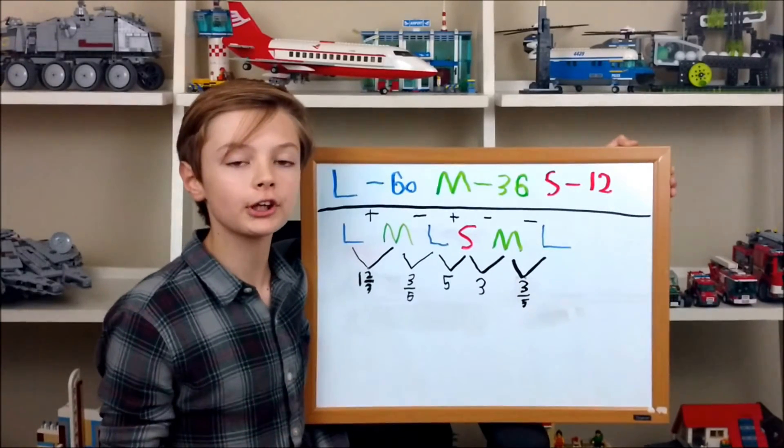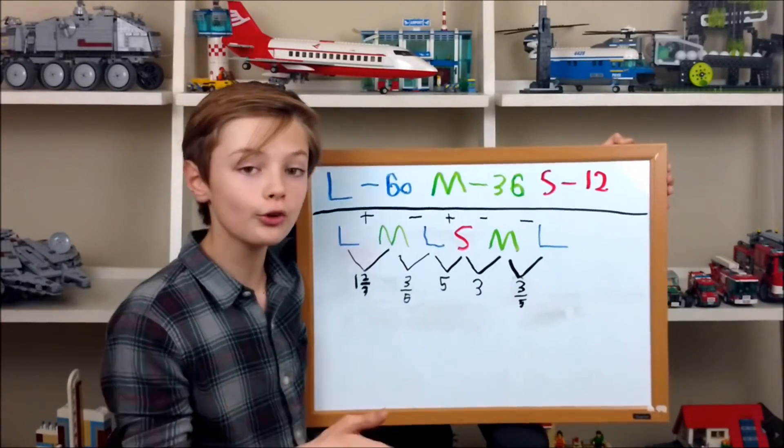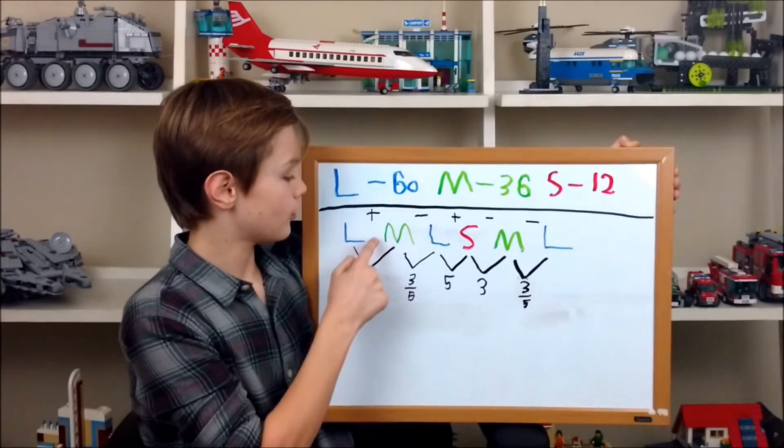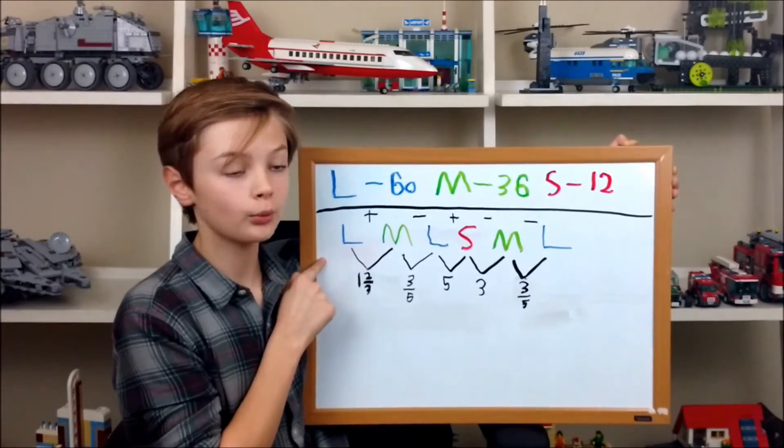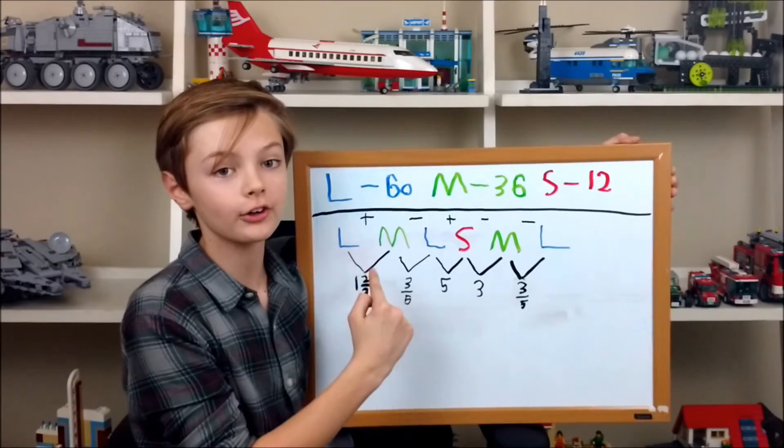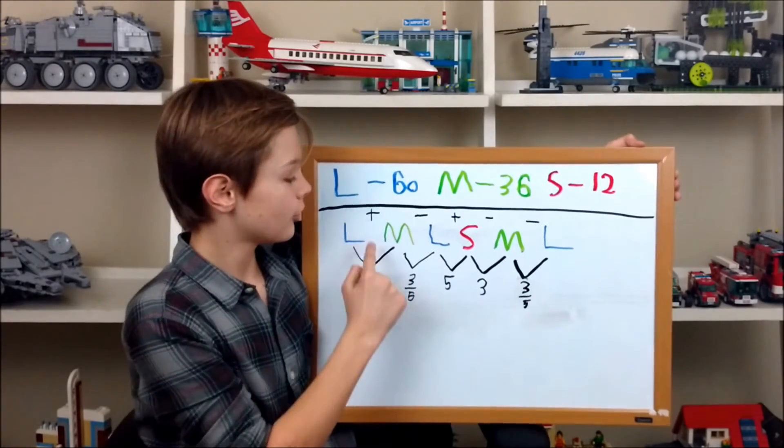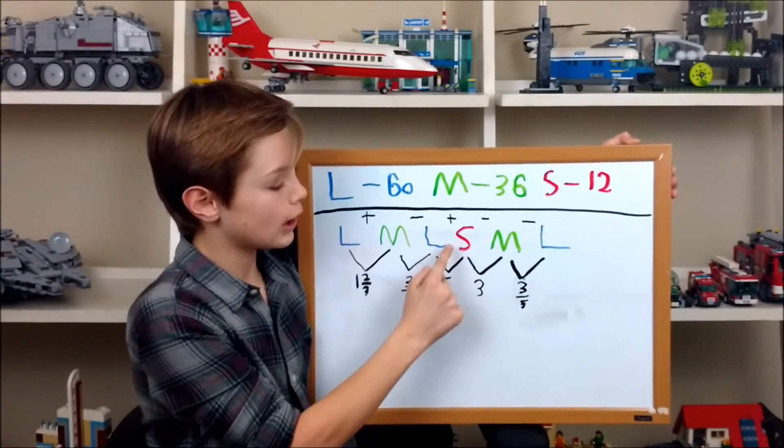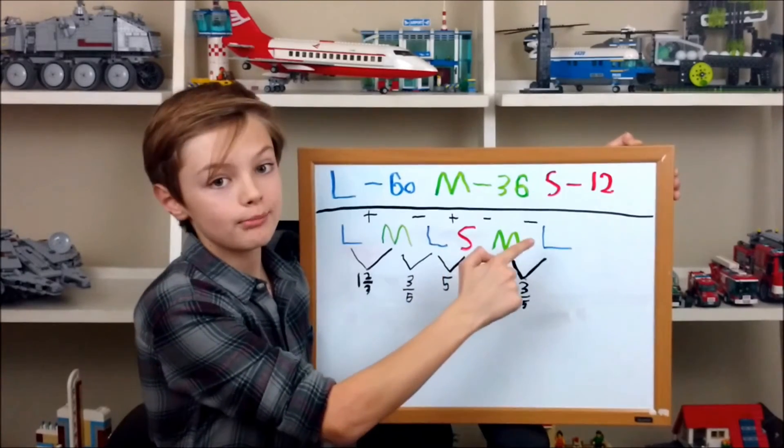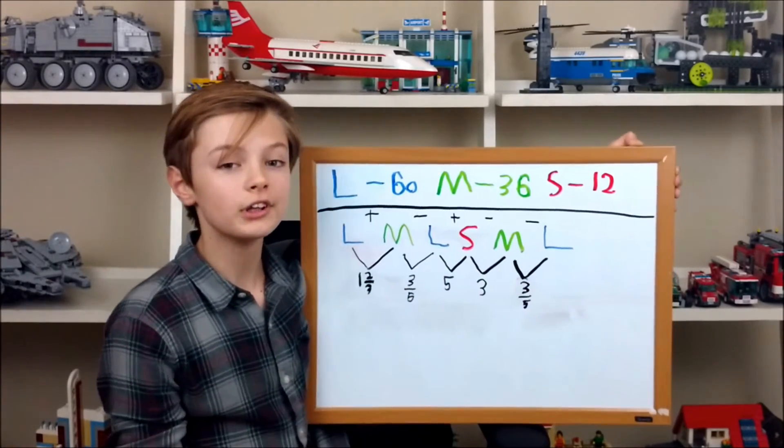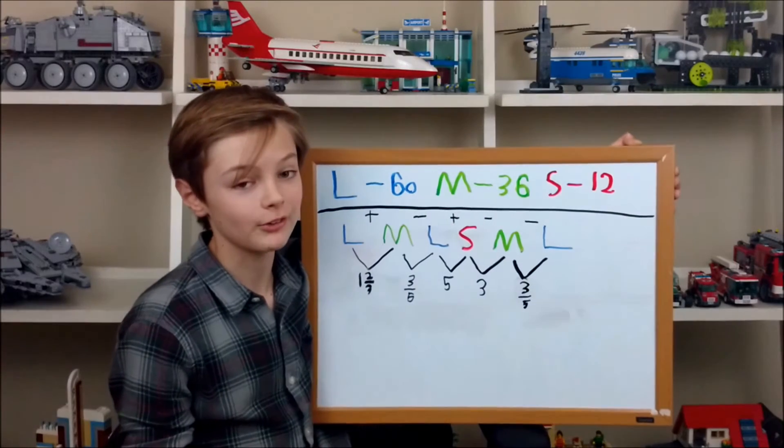Now you have to figure out if you gain or lose rotation. A bigger gear powering a smaller gear gains rotations. So: plus, minus, plus, minus, minus, minus. Now you're ready to simplify.